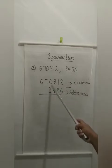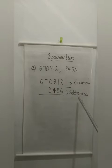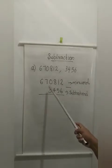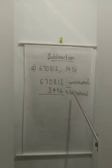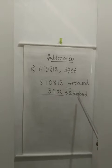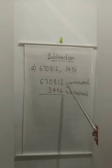And the smaller number that we are subtracting is known as the subtrahend. So the larger number from which we are subtracting is known as the minuend, and the smaller number which is subtracted is known as the subtrahend. Now the answer of the subtraction is known as the difference. Now how can you subtract it?